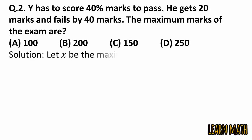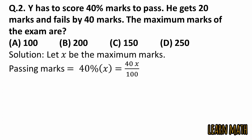Let X be the maximum marks of the exam. The passing marks is equal to 40% of X, which can be written as 40 by 100 into X. Now he gets 20 and he fails by 40, so 20 plus 40 is 60.